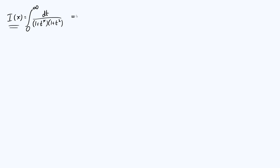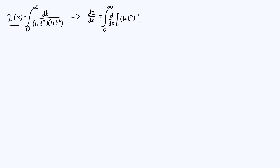The first thing we're going to do towards evaluating this — there are various ways to do this — is differentiate i with respect to its parameter x. So let's find di by dx. What we can do is put the derivative with respect to x inside the integral: the integral from zero to infinity of d by dx of the entire integrand, which is 1 plus t to the x to the minus 1, times 1 plus t squared to the minus 1, with respect to t.